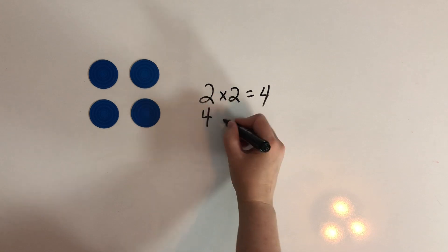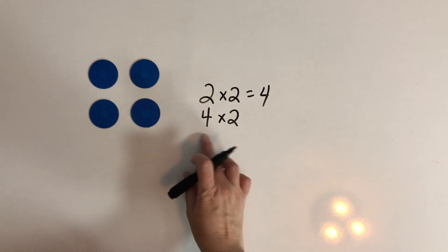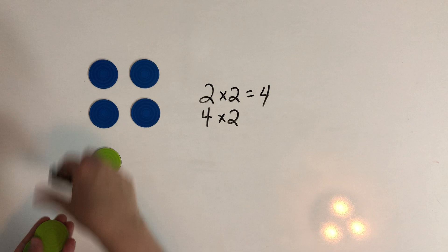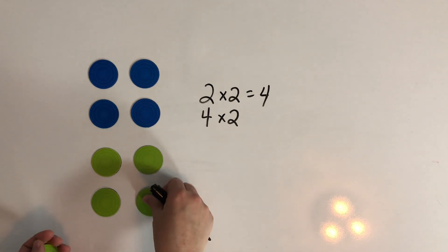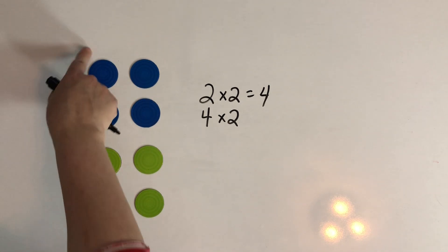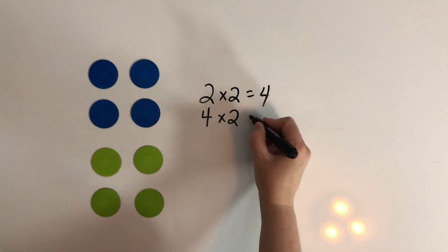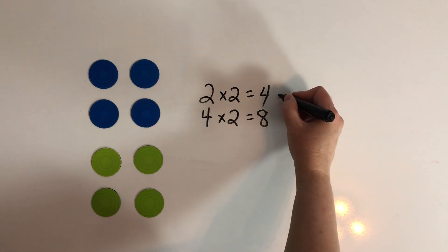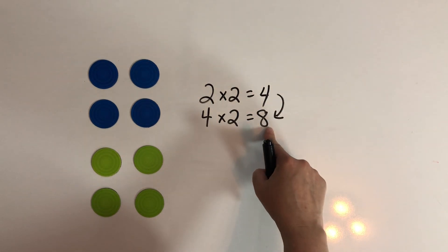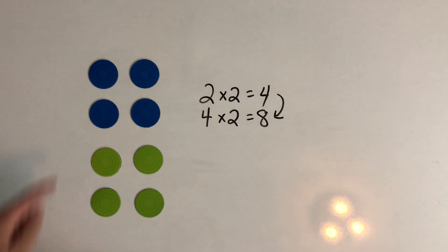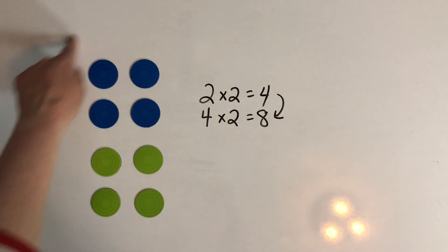Now if we wanted to figure out what four groups of two is, we're going to double the amount of groups, aren't we? We had two groups, now we have four groups, and that is going to make eight. And you can see eight is the double of four. So we not only doubled the amount of groups but we doubled the amount of objects in our array.